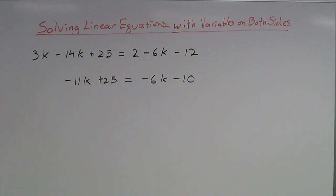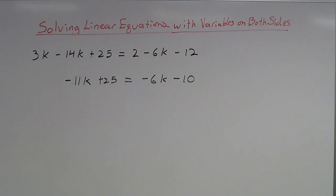That's the first thing you do — on both sides, left and right, gather everything together. Now you need to make a decision: I need to get variables on one side of my equation and numbers on the other side. It doesn't matter which side, as long as they're on different sides. A good rule of thumb for most students is to always get the variables on the left side, so that's what I'm going to do.